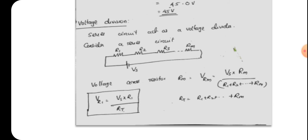The voltage divider rule states that for a series circuit with a voltage source, the voltage drop across any resistor equals the total voltage multiplied by that resistance value, divided by the sum of all resistances. So the voltage drop across Rm is: VRm equals Vs times Rm divided by R1 plus R2 plus R3 plus Rm. This is the voltage division equation.